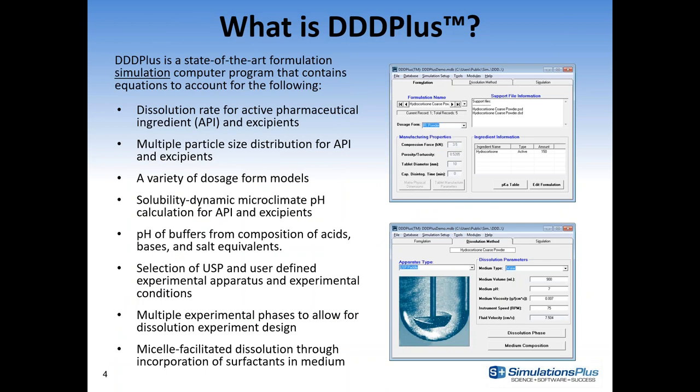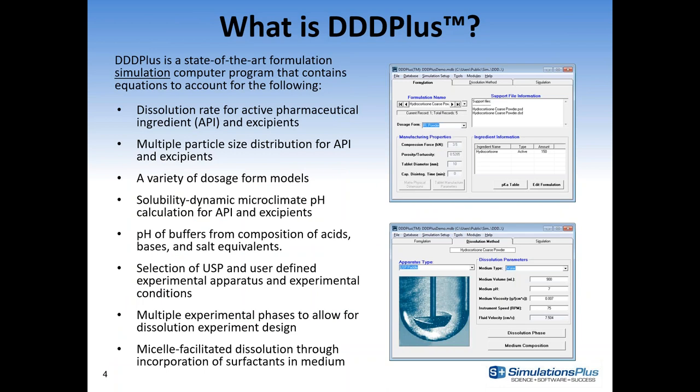What is DDD Plus? It's a software program that allows you to simulate dissolution — the dissolution rate for active pharmaceutical ingredients and excipients, both. You can specify the particle size distribution for both the API and excipients, and set certain excipients to be solubilizers or disintegrants. We have a variety of dosage form models: IR models for powder, solution, tablet, capsule; CR models for swellable matrices; and some new formulation models. We do a full dynamic microclimate pH calculation at the surface of the API crystals and excipients, as well as a full pH calculation of the bulk phase.